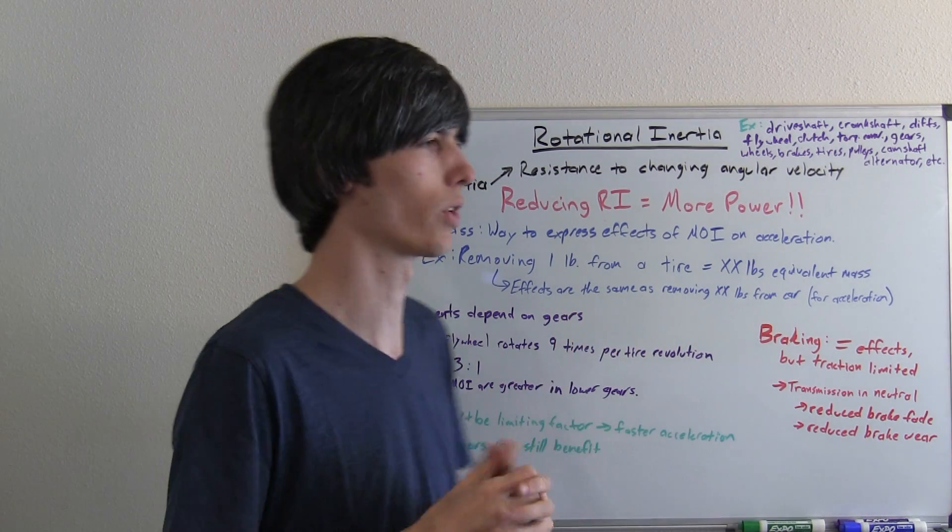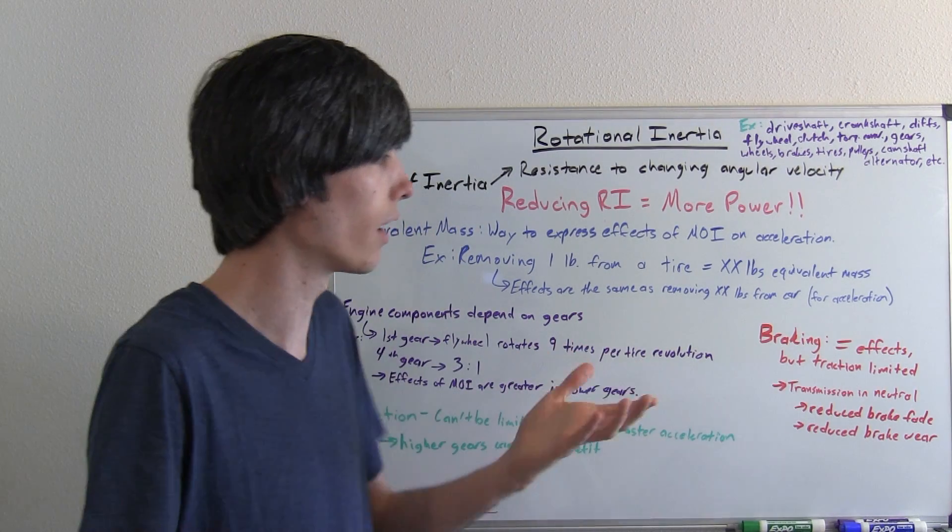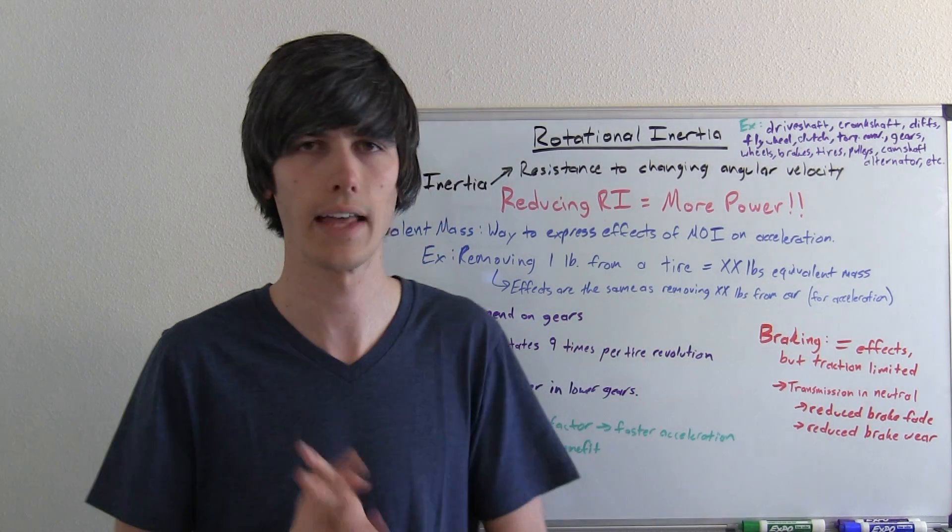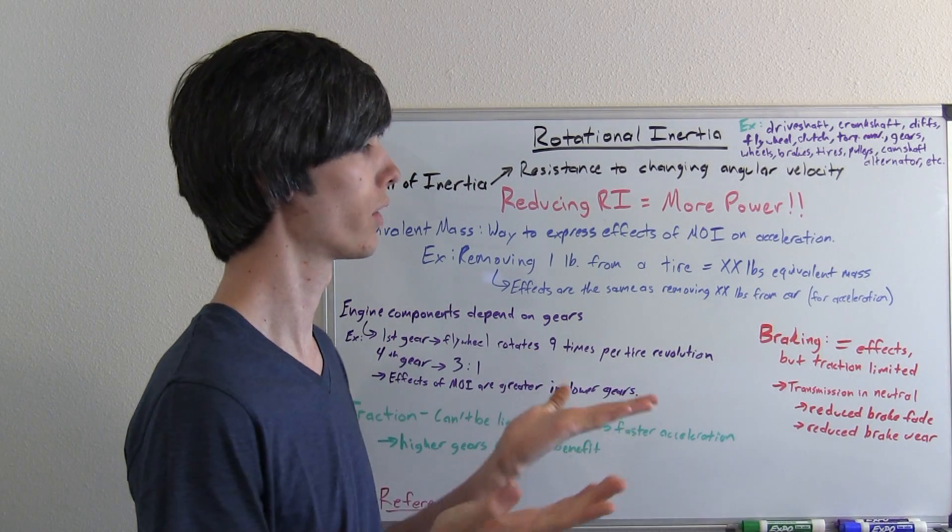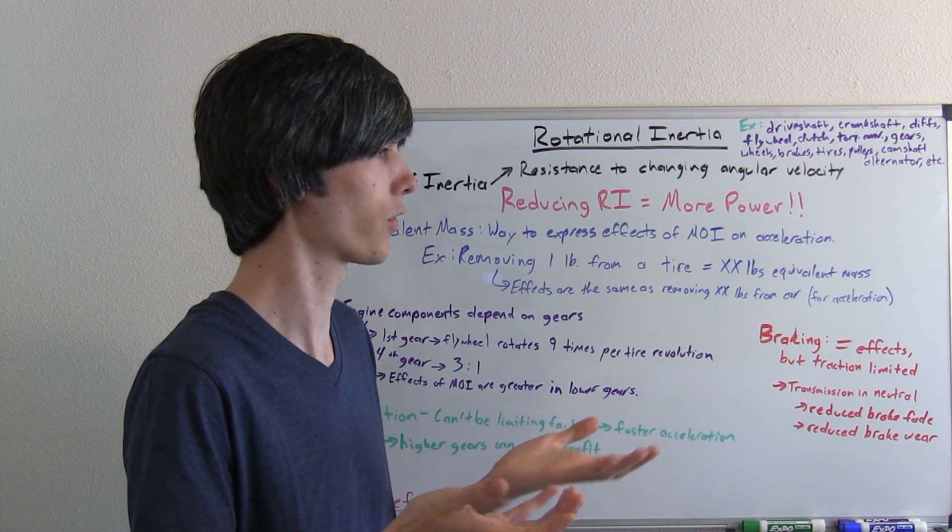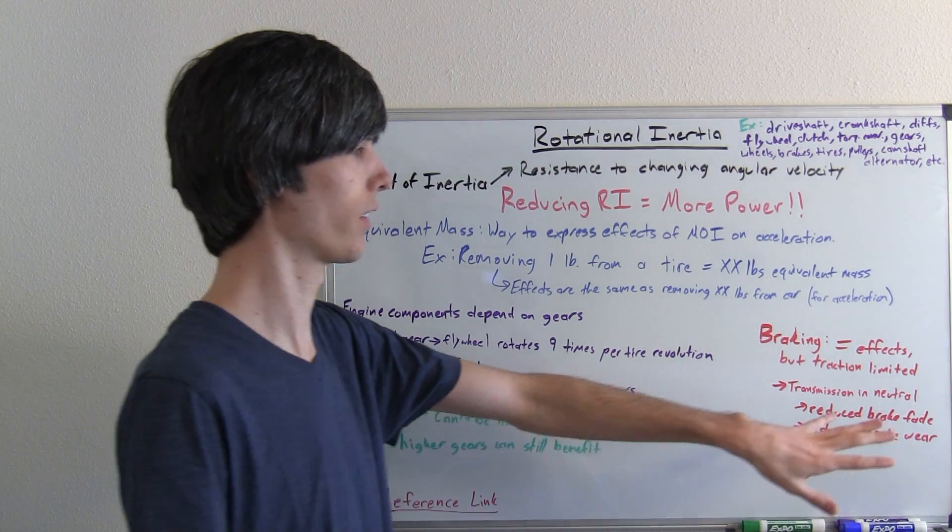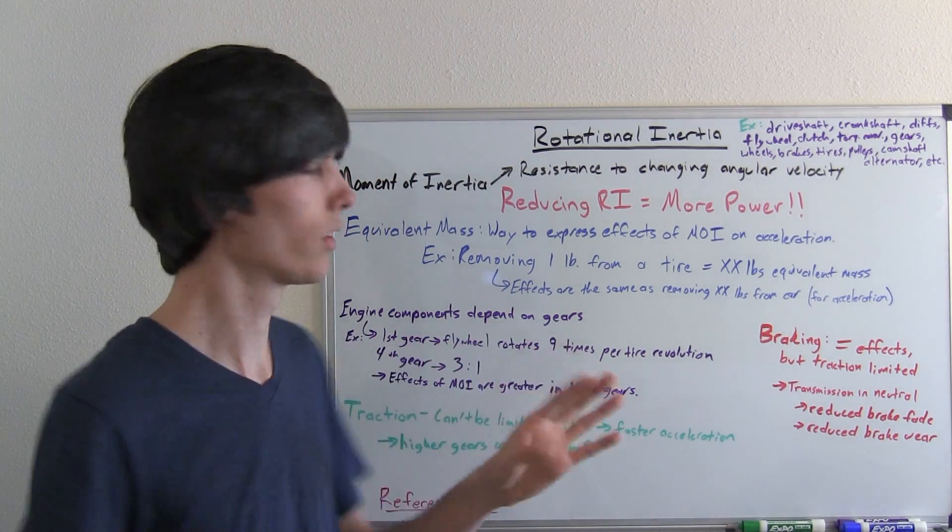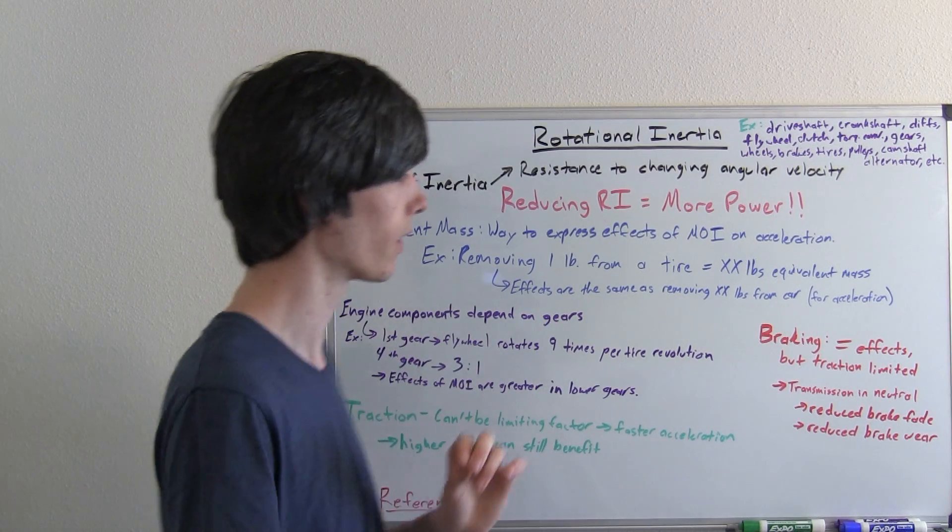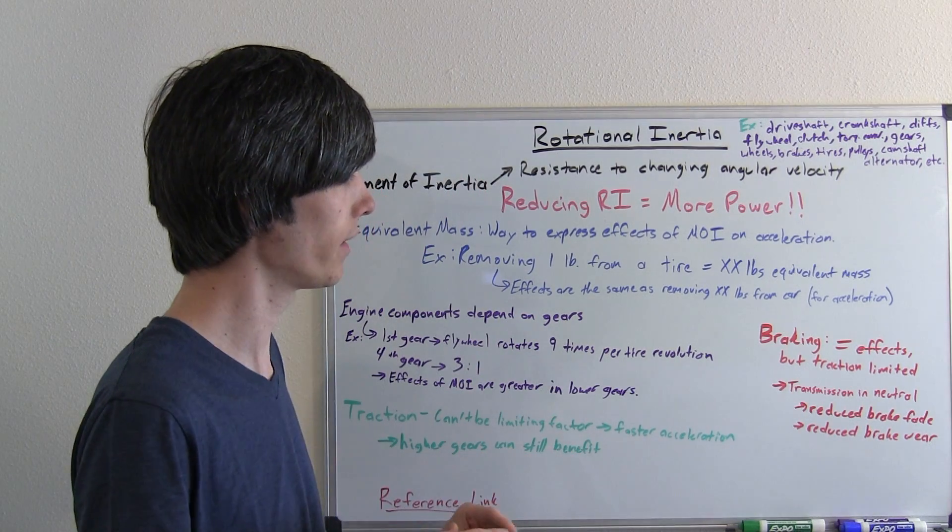So the thing to think about there is if you put your car in neutral, obviously, none of the engine components are going to matter. But nonetheless, tires generally are the limiting factor for braking.